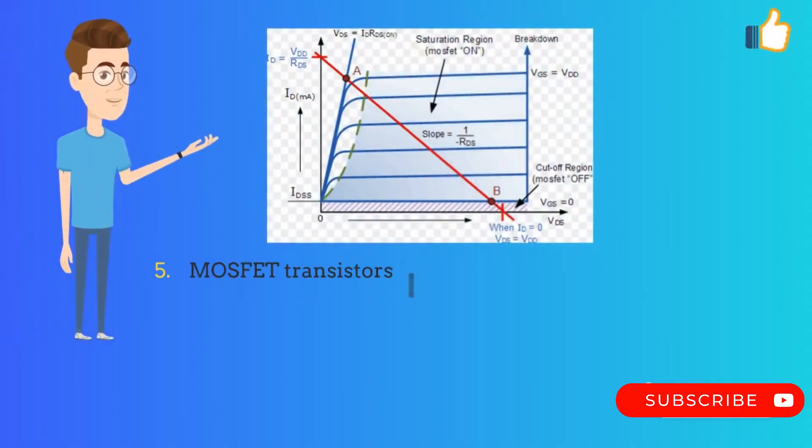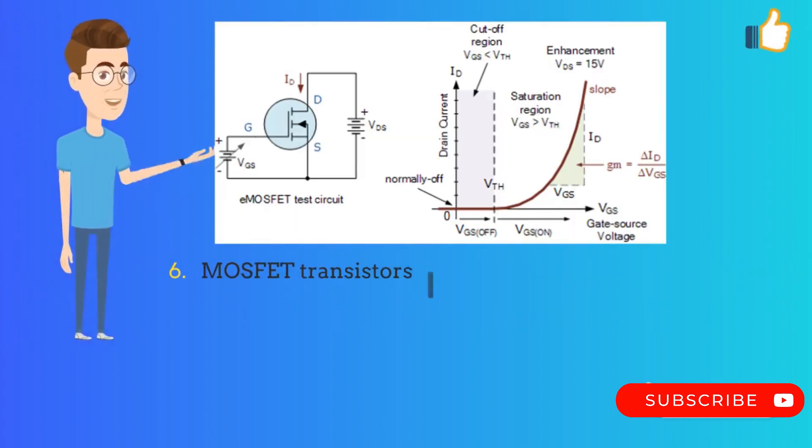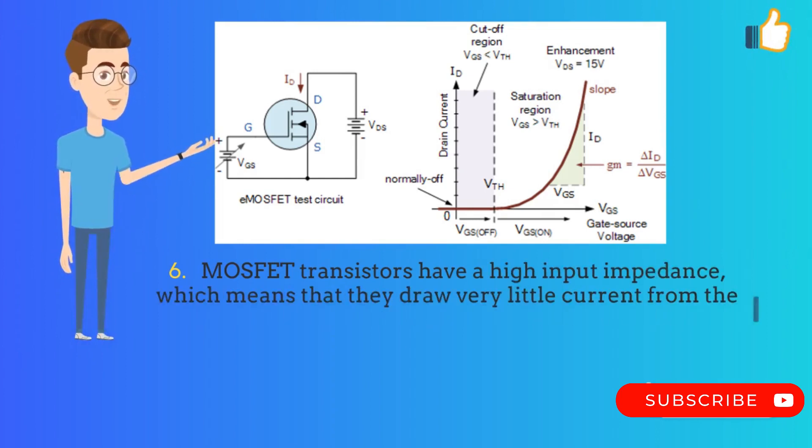MOSFET transistors can operate in three different regions: cutoff, linear, and saturation. MOSFET transistors have a high input impedance, which means that they draw very little current from the input source.